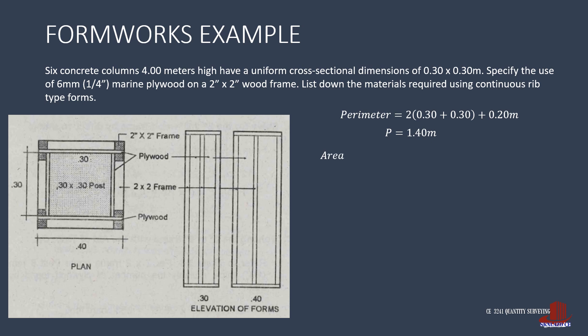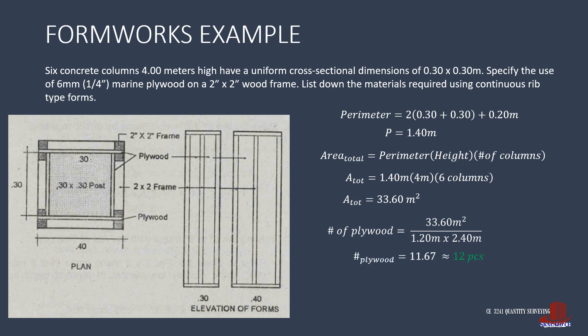The total area to be wrapped with the form is 1.4 meters times the height of 4 meters with 6 columns, which totals to 33.6 square meters. The number of plywood is then computed as the total column area of 33.6 divided by the effective area of plywood as 1.2 by 2.4 meters, resulting in 11.67 rounded up to 12 pieces of plywood.